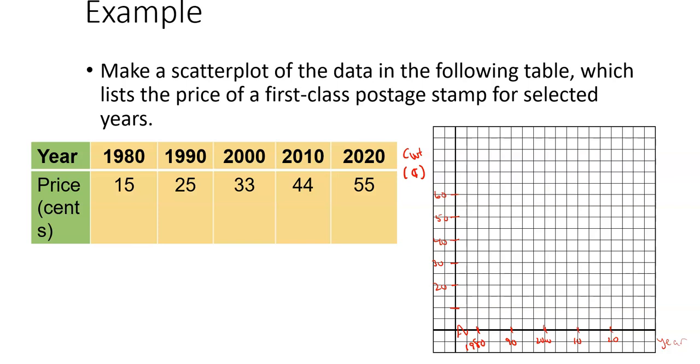Let's plot. In 1980, it was worth 15 cents. I come over to 1980, come over to 15 cents and make a dot. In 1990, it was worth 25 cents, so 25 cents in 1990 is right there. Notice the x-axis is on 1990, the y-axis is at 25 cents. In 2000, it was worth 33 cents. There's 35 cents, so let's go a little bit below 35 and there's 33.